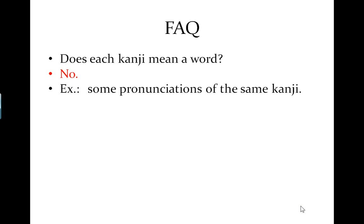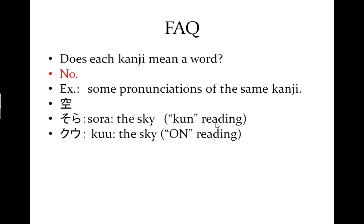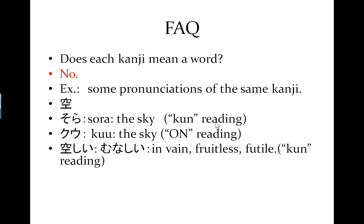Let's check out some different pronunciations of one kanji in Japanese. This is one kanji. One pronunciation is sora, which means the sky — this is in kun reading. Another pronunciation is ku, which also means the sky — this one is on reading. There's also munashi, which means in vain, fruitless, futile, which is a kun reading. So you see, although it's the same character, the pronunciation is very different: munashi, ku, and sora.